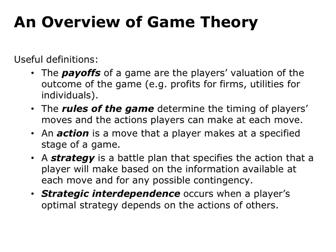The payoffs of a game are the player's valuation of the outcomes of the game — for example, profits for firms or utilities for individuals. The rules of the game determine the timing of players' moves and the actions players make at each move. An action is a move that a player makes at a specific stage of a game. A strategy is a battle plan that specifies the action that a player will make, based on the information available at each move, and for any possible contingency.